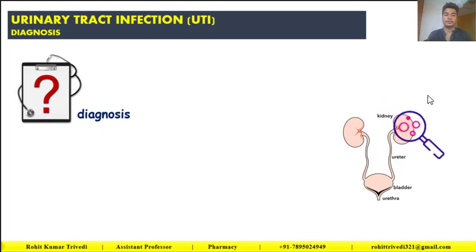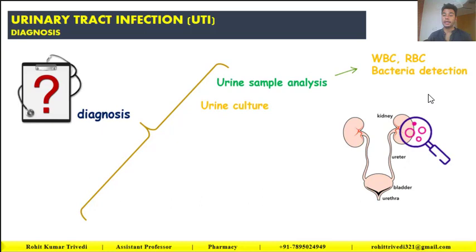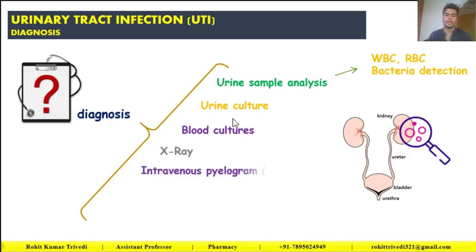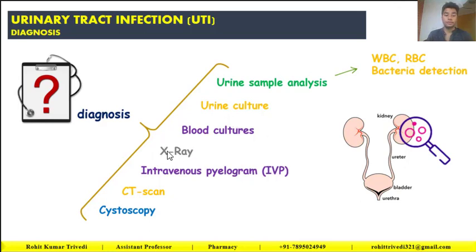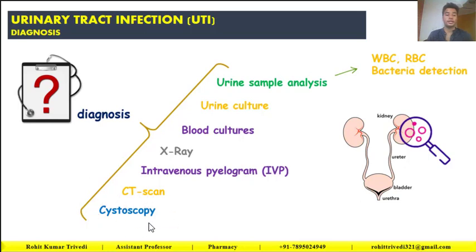For both upper and lower urinary tract infections, the first diagnostic method is urine sample analysis — WBC, RBC, and bacteria detection in urine. The second is urine culture and blood culture, where a sample is taken to grow bacteria and identify the organism to confirm the infection. X-rays of the kidneys, ureter, bladder, and urethra give a rough picture of infection. Intravenous pyelogram (IVP) is a specific test for UTI diagnosis. CT scans and cystoscopy may also be used.